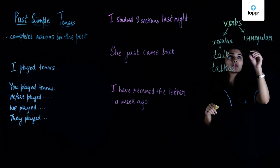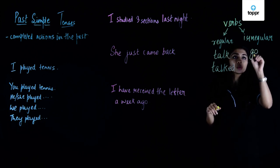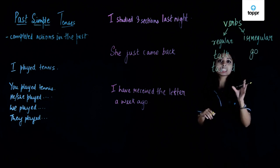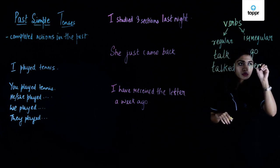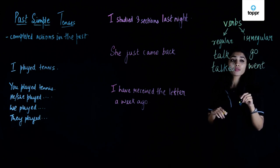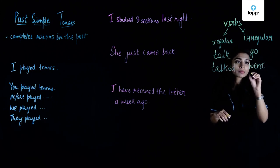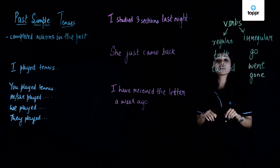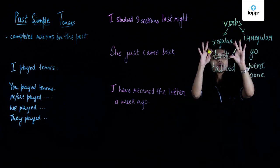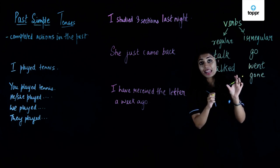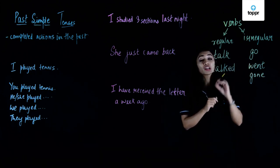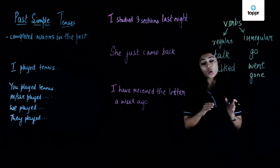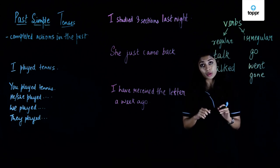Let's take the word 'go'. The infinitive form 'go' has the past form 'went', and the past participle form of this verb is 'gone'. So we have go, went, and gone. Regular verbs form their past forms by adding '-ed', and irregular verbs do not — they form their past forms with a completely different word.